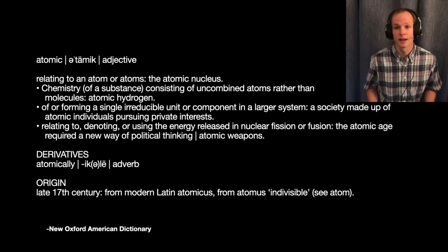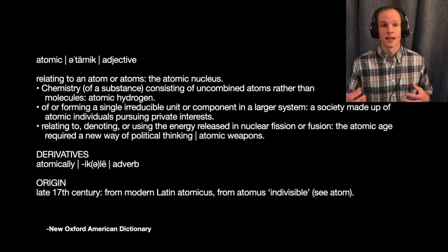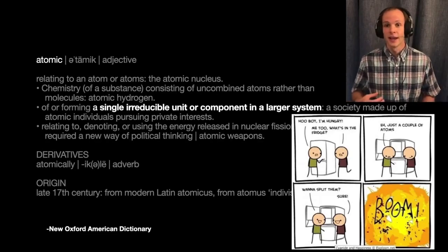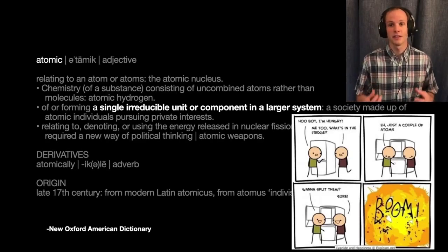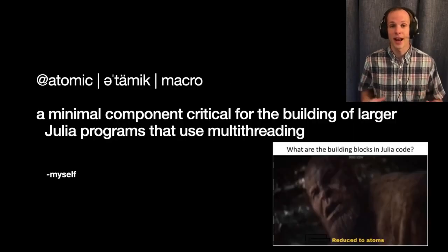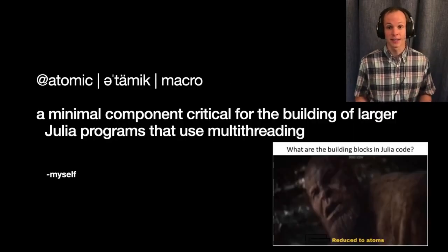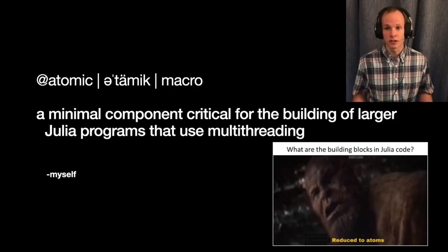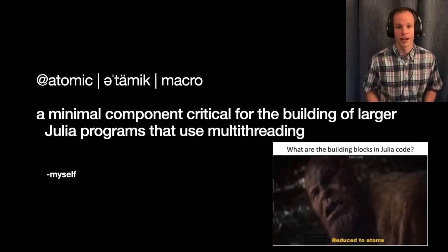The New Oxford American Dictionary defines atomic in several ways, and the one I'm interested in today is the part that says it's a single irreducible unit or component in a larger system. From that, I make my own definition of what atomic is: a minimal component critical for building larger Julia programs that use multithreading.